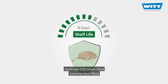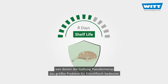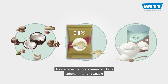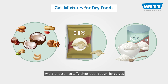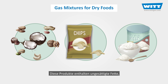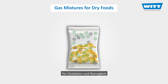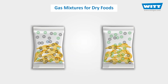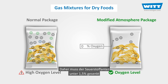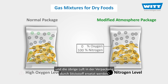Also, carbon dioxide has a strong inhibiting effect on the growth of bacteria, of which Pseudomonas presents the greatest problem for fresh meat. As another example, let's consider dry foods and snacks like peanuts, potato chips, and baby milk powder. These foods contain unsaturated fats that make them sensitive to oxidation and rancidity when oxygen is around. So the oxygen amount must be reduced to under 1.5% and the rest of the air inside the package must be replaced with nitrogen.